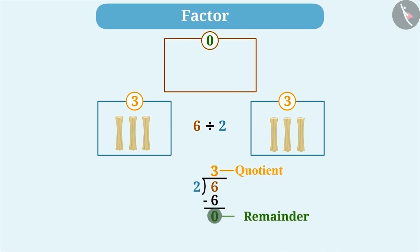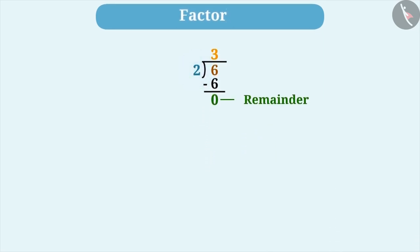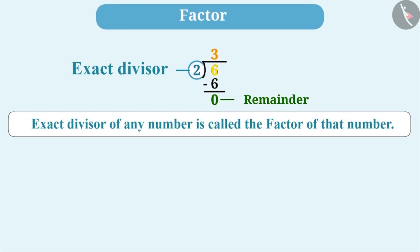Remainder 0 has a great importance. Remainder 0 indicates that the number 2 is the exact divisor of number 6. Exact divisor of any number is called the factor of that number.